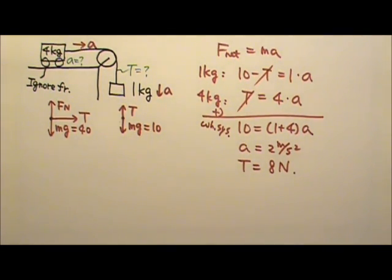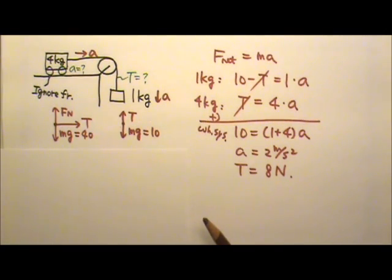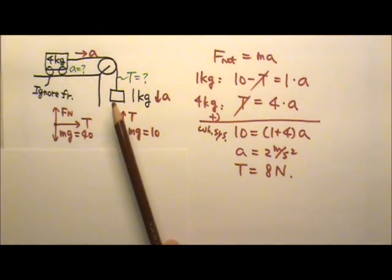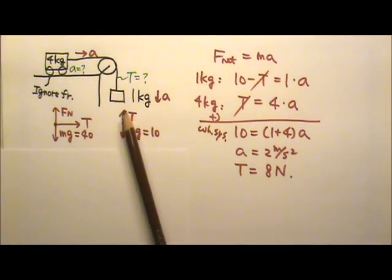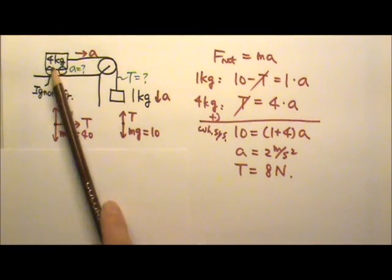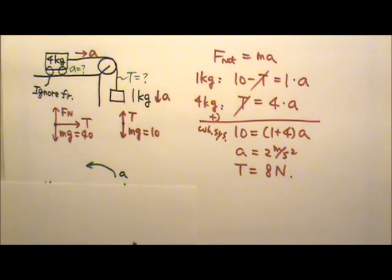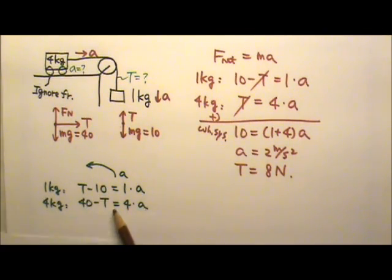So that's it. One mistake I sometimes see in my students' work is this. I would see people saying that this 4 kg is heavier than the 1 kg. So the system is going to accelerate to the left. So the acceleration goes that way. Therefore, they would write for the 1 kg because the acceleration goes up, the tension will be bigger. So for the 1 kg, they would write T minus 10 equals to 1 A. And for the 4 kg, they would write 40 minus T equals to 4 A.